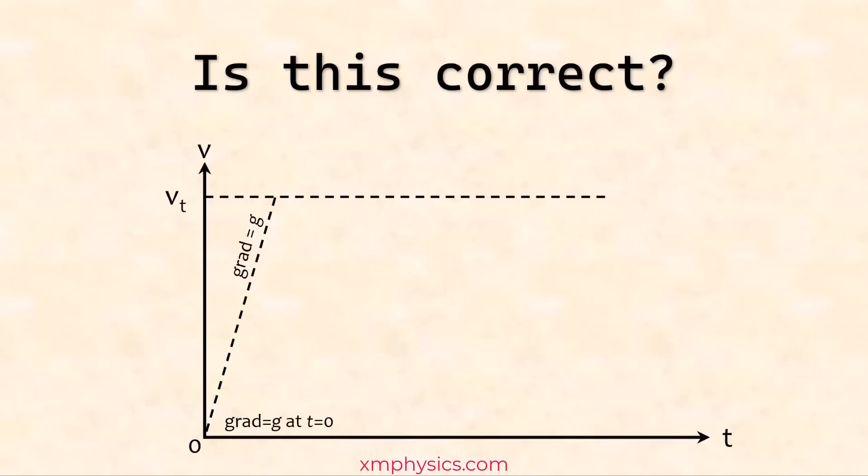Get it? So at the origin, the graph should start off with the exact same gradient as the straight line graph with gradient equals to g. So is this correct now? It's still wrong. It's still wrong. What's wrong with this graph? Look at here.